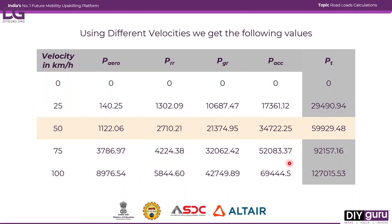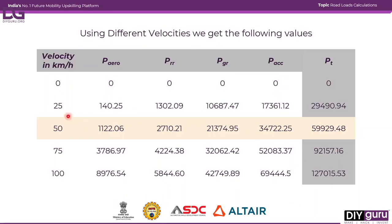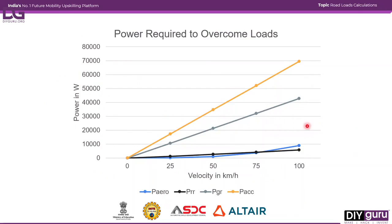The previous calculations used only a single velocity of 50 km/h. Solving for different velocities gives various power figures. The numbers at the 50 km/h mark are highlighted, and calculations for a range of velocities have been done to observe the trend. From the table, as velocity increases, power required also increases. Plotting this in a chart shows aerodynamic power slightly increasing, rolling resistance almost linear, and gradient power increasing with speed.